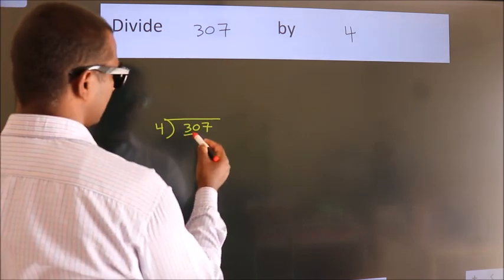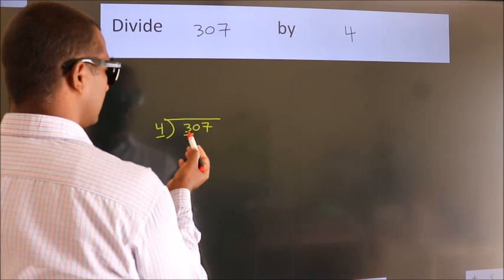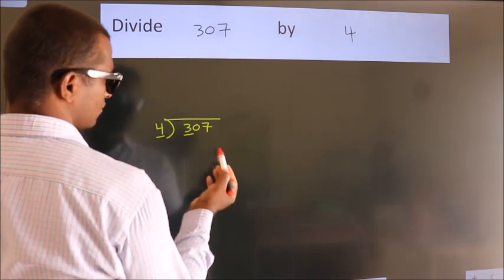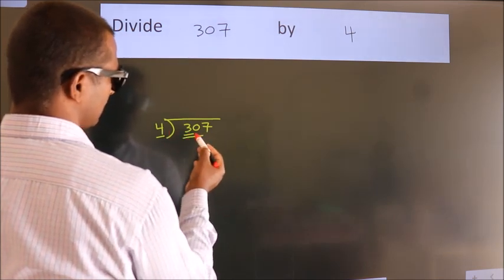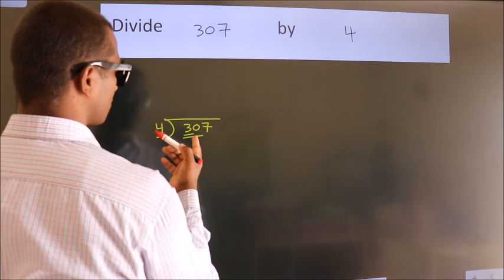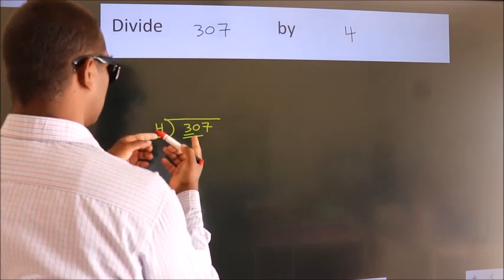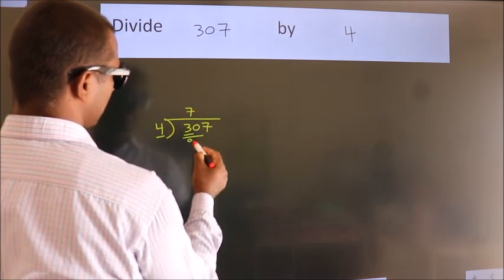Here we have 3. Here 4. 3 smaller than 4. So we should take 2 numbers. 30. A number close to 30 in 4 table is 4 7s, 28.